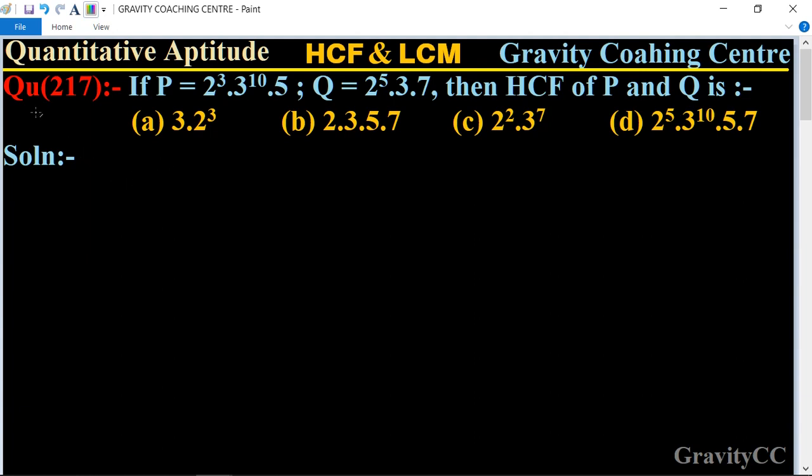Quantitative aptitude chapter HCF and LCM, question number 217. If P is equal to 2 to the power 3 into 3 to the power 10 dot 5, and Q equal to 2 to the power 5 into 3 into 7, then HCF of P and Q is.